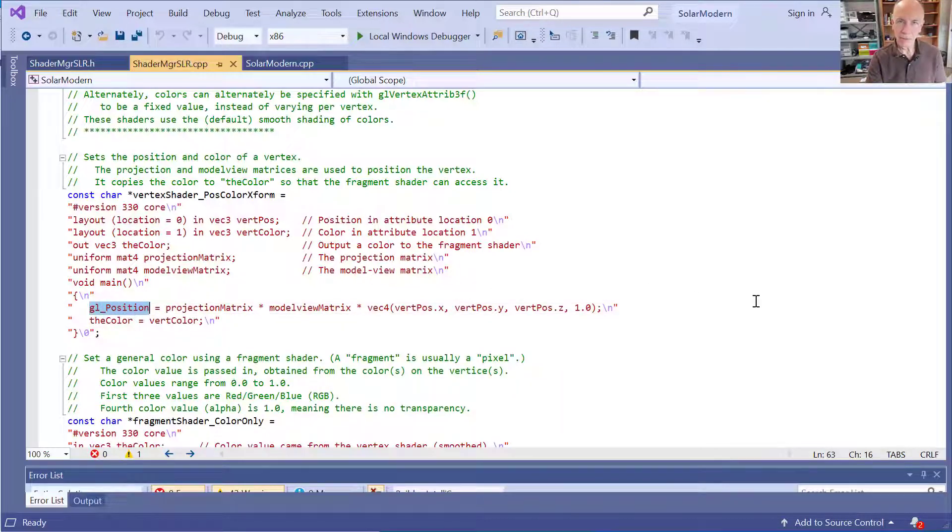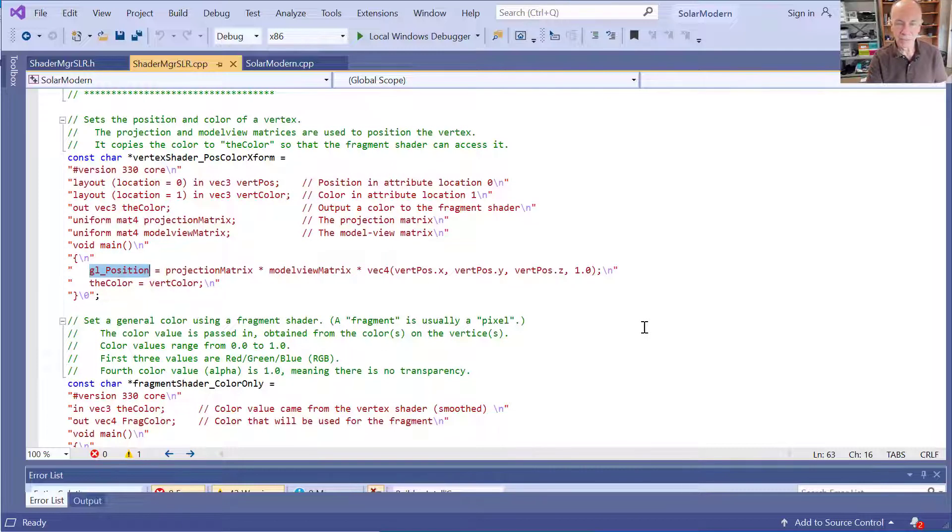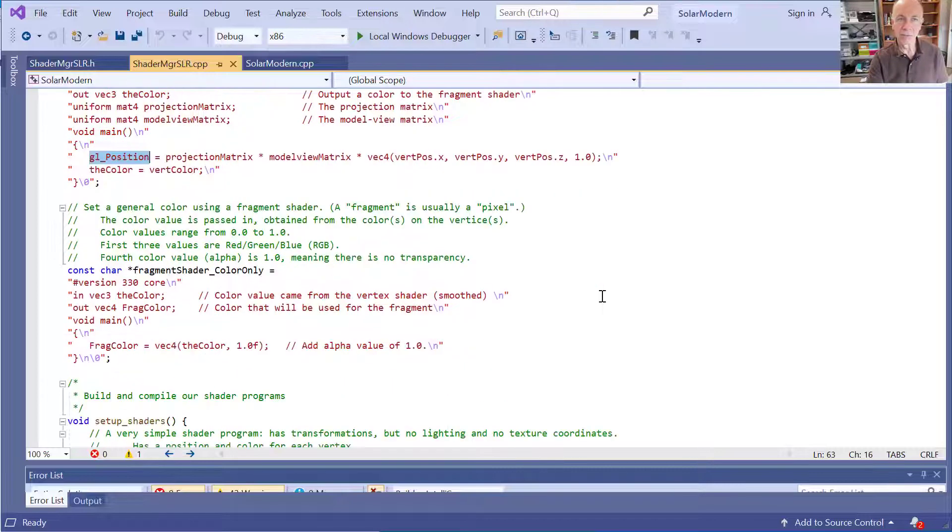And so all that's happening here is these projection and model view matrices that were defined in the C++ code are now in the end multiplying by the homogeneous vector with the x, y, z, 1 values here. The fragment shader could use the uniform matrices projection matrix and model view matrix, but it doesn't. It's a very simple fragment shader. All it does is pass through the color without any alterations at all. So we'll be looking at more sophisticated shader programs in the future when we get to lighting. But for the moment this is about as complex as it gets.